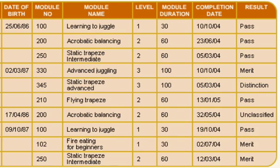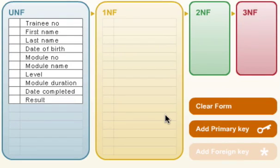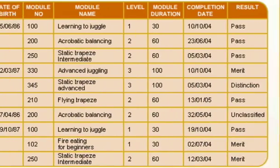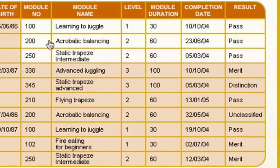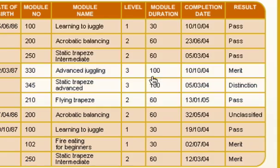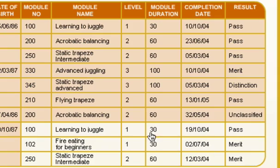Let's have a look at getting this into first normal form. The first step is to split it up — there's a table with attributes that repeat and attributes that are not repeating. Looking back at our unnormalized data, you can see that the module number repeats, the level repeats, the module name repeats, the duration repeats, the completion date repeats, and the result repeats. The only things that don't repeat are the first name, last name, trainee number, and date of birth. So I'm going to split that up.